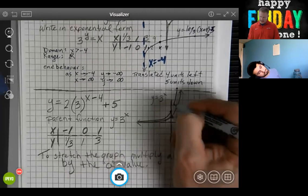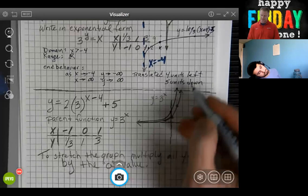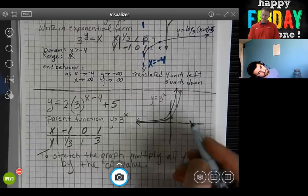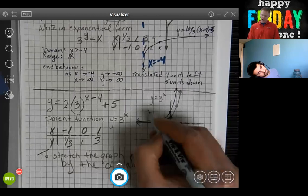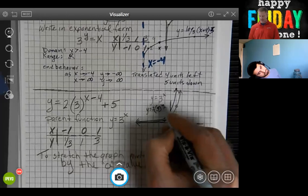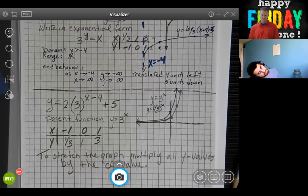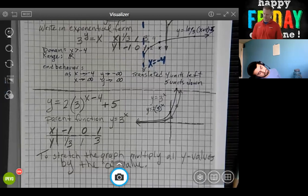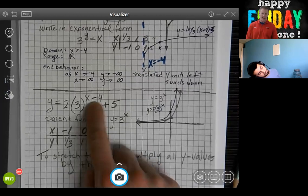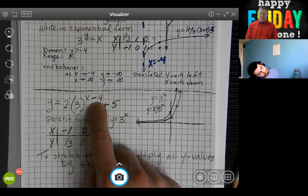So you can see that this is steeper. So that's the graph y equals 2 times 3 to the x power. Now we're going to be ready to translate that. We're going to translate it 4 units right. Remember, it's always opposite of what that h looks like. 4 units right, 5 units up.